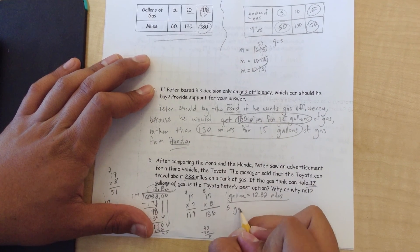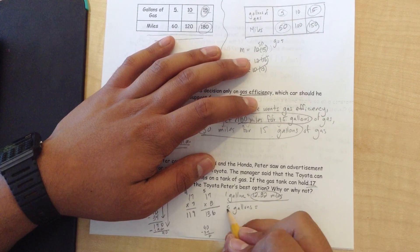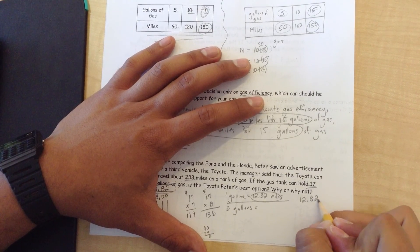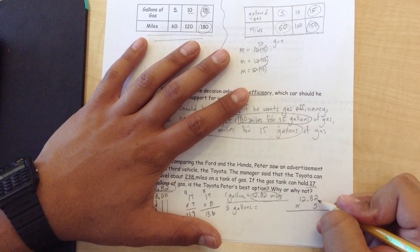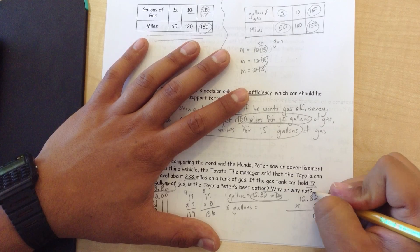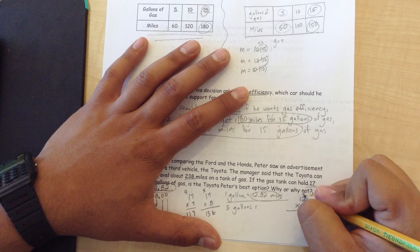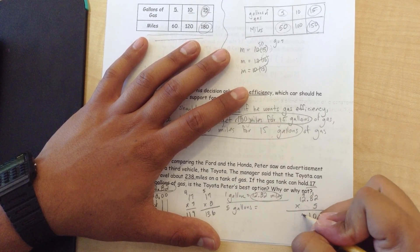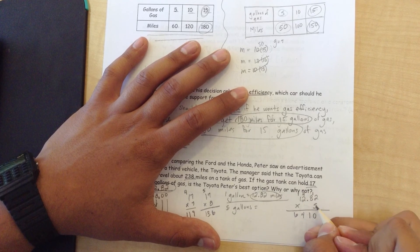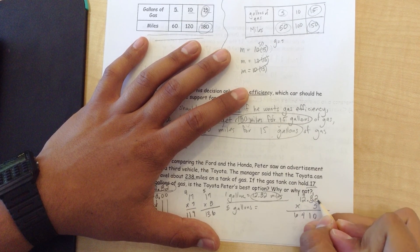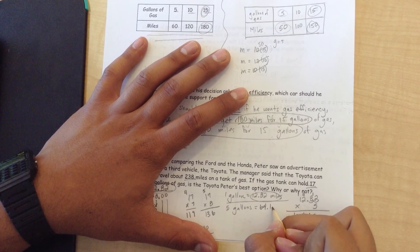That means that 5 gallons equals what? In order to figure that out, let's multiply 14.82 times 5. 5 times 2 is 10. Put the 0 there. Carry the 1 over. 5 times 8 is 40 plus 1. Carry the 4 over here. 5 times 4 is 20 plus 4 is 24. 5 times 1 is 5 plus 2 is 7. That's how many spaces of decimals. 1, 2. So 5 gallons would get you 74.10 miles.